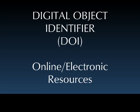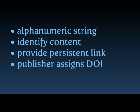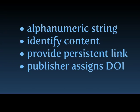A DOI, or a Digital Object Identifier, is a unique alphanumeric string assigned by a registration agency to identify content and provide a persistent link to its location on the Internet. The publisher assigns a DOI when an article is published and made available electronically.